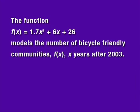The function f(x) = 1.7x² + 6x + 26 models the number of bicycle-friendly communities, f(x), x years after 2003.